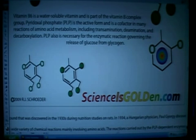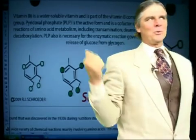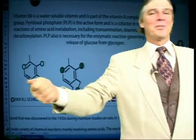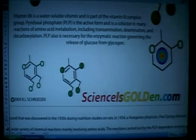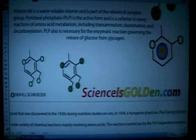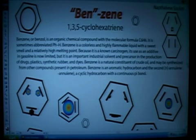PLP, which is pyridoxal phosphate. Why are they calling it PLP? I don't know. It's also necessary for the enzymatic reaction governing the release of glucose from glycogen. So it was discovered in the 30s during nutritional studies on rats, thanks to a Hungarian named Paul Gyorgy. So he discovered that vitamin B6 is really essential to any kind of protein-building amino acid metabolism you've got going on.